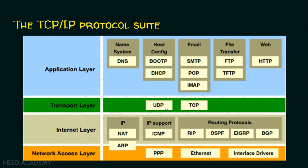The widely used transport layer protocols are TCP (Transmission Control Protocol) and UDP (User Datagram Protocol). Any application will use either TCP or UDP. In the application layer, we have DNS (Domain Name System), host configuration protocols like BootP and DHCP (Dynamic Host Configuration Protocol), email protocols like SMTP, POP, and IMAP, file transfer protocols like FTP and TFTP, and HTTP for accessing web pages. This is the TCP/IP protocol suite.